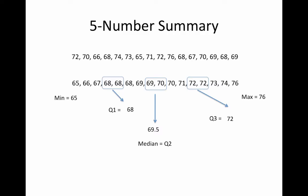In the last video, we looked at the five-number summary of our 16 heights of girls' basketball players, and we came up with these five numbers: the minimum, the first quartile, the median or second quartile, the third quartile, and the maximum.